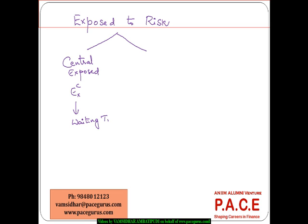The waiting time is actually observed, meaning when the death happens, the time is counted only until the period of death. That is what we are calling as central exposed to risk, and it has a lot of applications when we talk about multi-state models or even Poisson models.